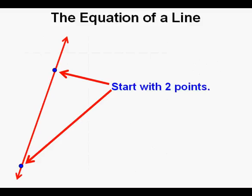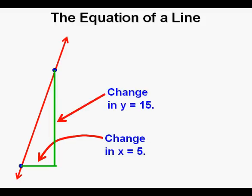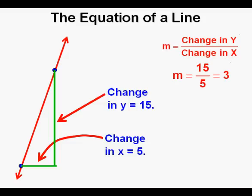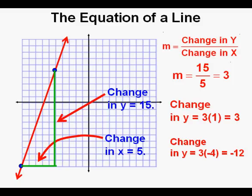Let's consider this graph to help us understand the concept of slope. We start with these two points. To get from one point to the other, we go over to the right — a change in x of 5 units — and we have a change in y of up 15 units. Looking at the slope formula, verbally it's m equals the change in y divided by the change in x. In this case, it will be 15 over 5, which equals 3. So if we increase x by 1, the change in y would be 1 times 3, which equals 3. If we had a change in x of negative 4, we would have a change in y of negative 4 times 3, which equals negative 12. With a coordinate grid, we can determine changes by counting the units or boxes.